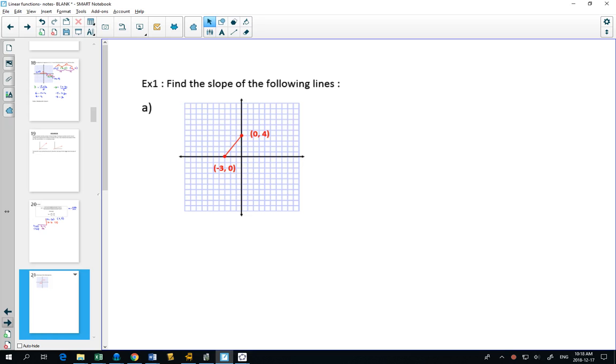So find the slopes of the following lines. You could either use the formula or you could just count it from the graph. Often if you have a graph, it's easy to count. If I go from one point to the other, what's my run? 3. What's my rise? 4. My slope, rise over run, is 4 over 3.